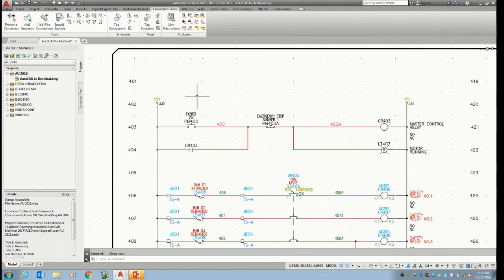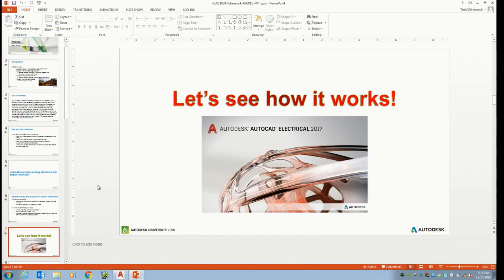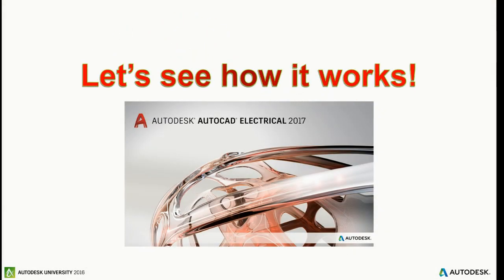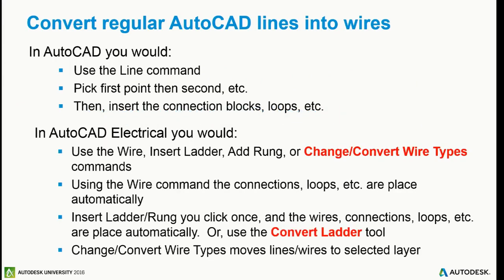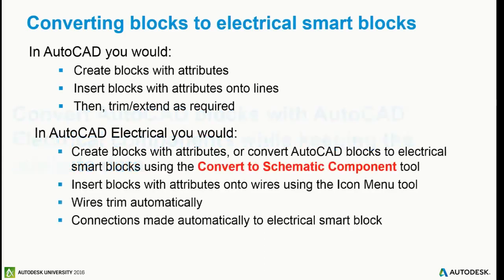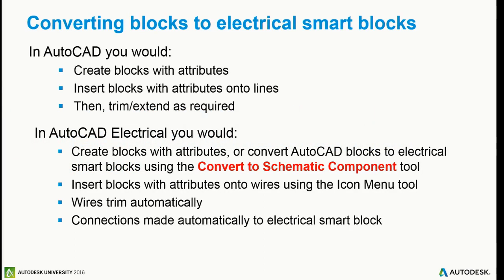What about these blocks? I showed you I have done blocks — you don't necessarily need done blocks in there. There are other tools for exploded blocks. I have some not-smart blocks. In this particular case, you have a block that has attributes, they just aren't electrically smart. But you're going to end up using tools to convert them. Once you make them smart, once you have the block smart, it will automatically trim your wires and recognize them as wire connections.